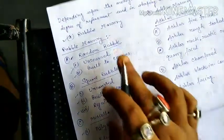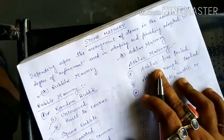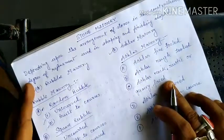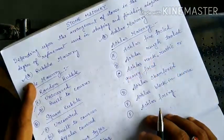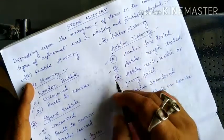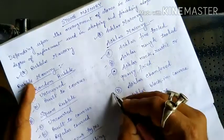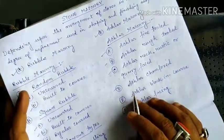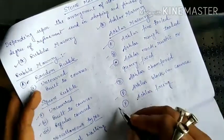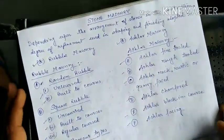Stone masonry is divided into rubble masonry and ashlar masonry. Ashlar masonry includes: ashlar fine-tooled, ashlar rough-tooled, ashlar rock rustic, quarry faced, ashlar chamfered masonry, ashlar block-in-course masonry, and ashlar facing masonry.